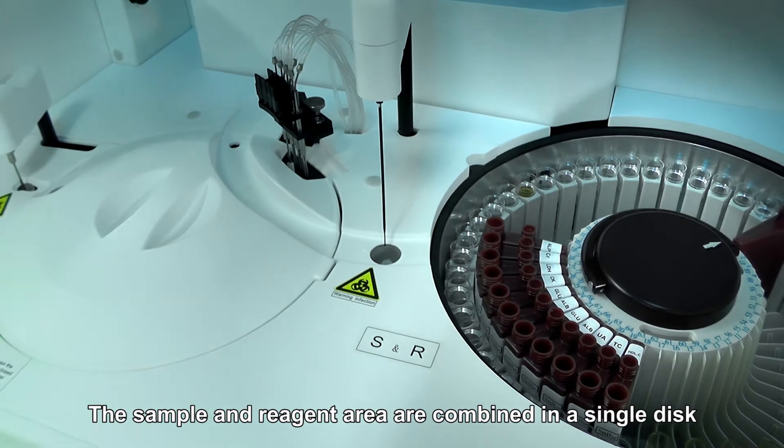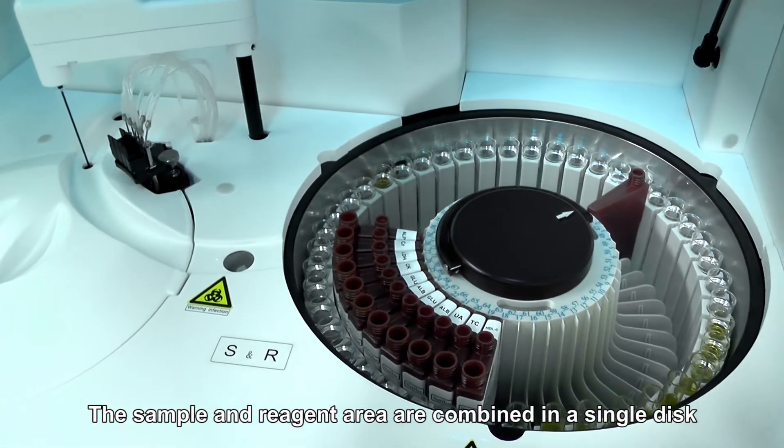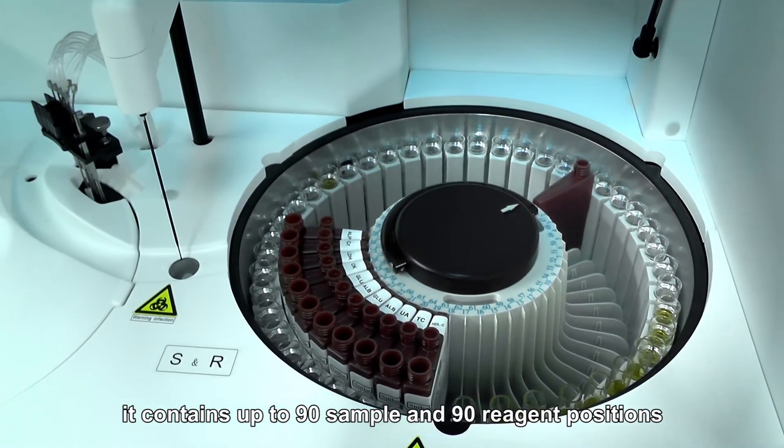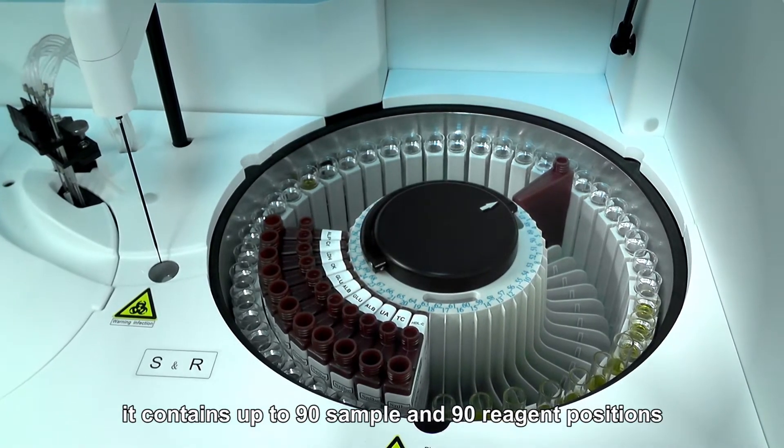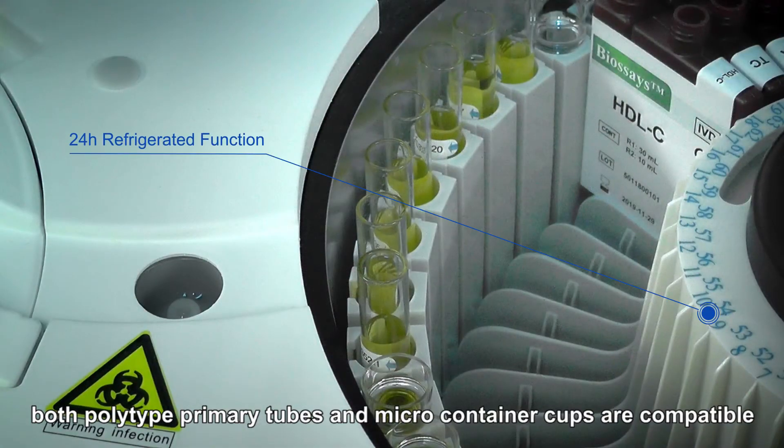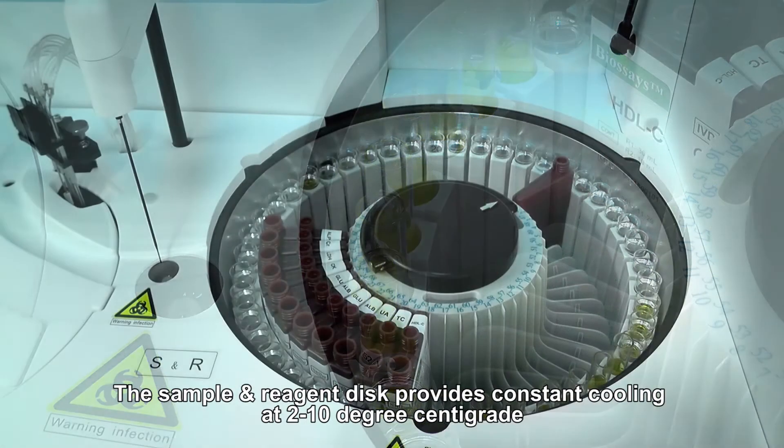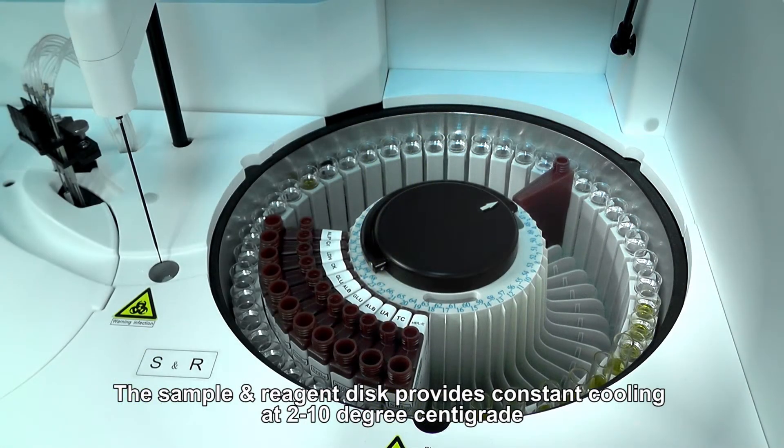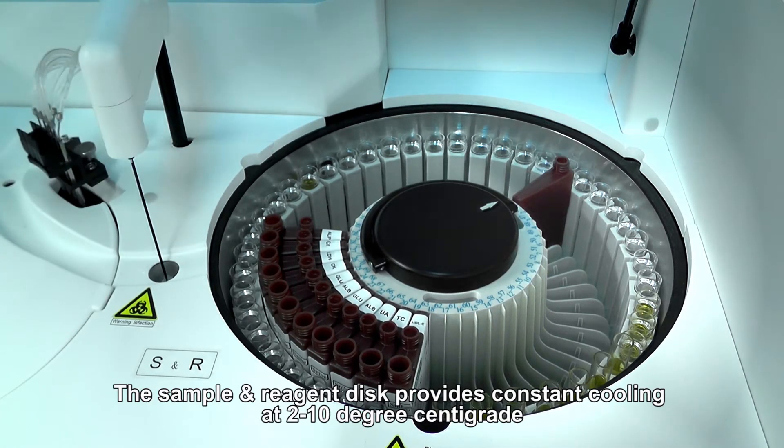The sample and reagent area are combined in a single disk. It contains up to 90 sample and 90 reagent positions. Both polytype primary tubes and microcontainer cups are compatible. The sample and reagent disk provides constant cooling at 2 to 10 degrees centigrade.